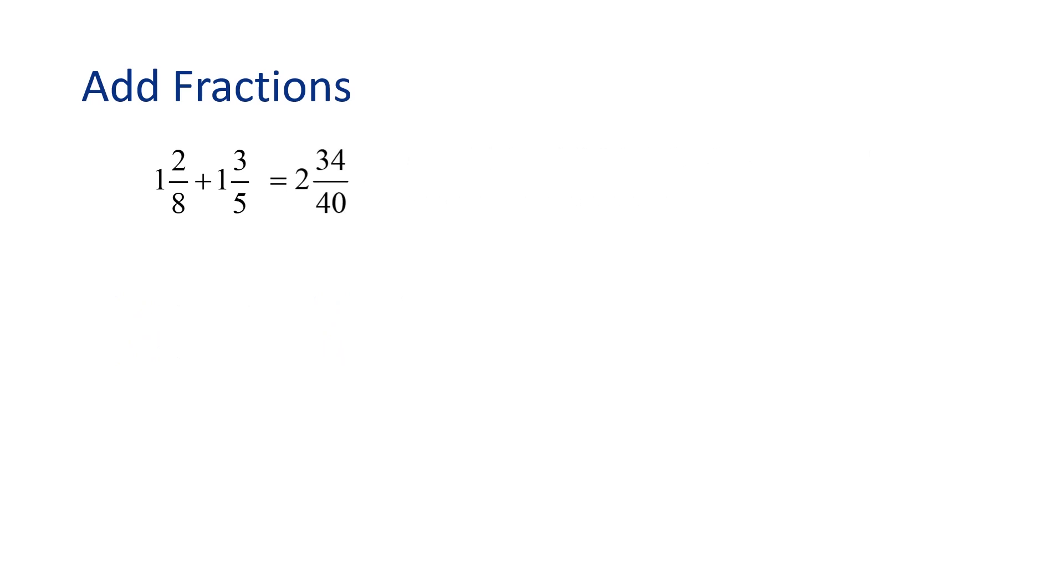You know what? 34 40ths can be simplified, because both 34 and 40 are even numbers. To simplify a fraction, we can cancel the largest common factor in common between the numerator and denominator. In this case, it's 2. 34 can be rewritten as 2 times 17, where 40 can be rewritten as 2 times 20. We can cross out the common factor of 2. To simplify, this gives us 17 20ths. That means 2 and 34 40ths is equivalent to 2 and 17 20ths. Nice work!